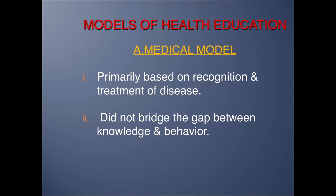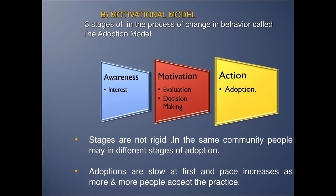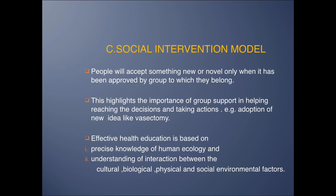Coming to models of health education, there are various models. The medical model was primarily based on recognition and treatment of disease — it does not bridge the gap between knowledge and behavior. You just go, see the problem of diarrhea, give ORS and come back without telling them the importance of how diarrheal diseases should be tackled. The motivational model, or adoption model, has three stages in the process of behavior change: you first create awareness and arouse interest, then motivate them by ensuring they participate in decision making, and finally they can adopt that behavior. Adoptions are slow at first but the pace increases as more and more people accept the practice.